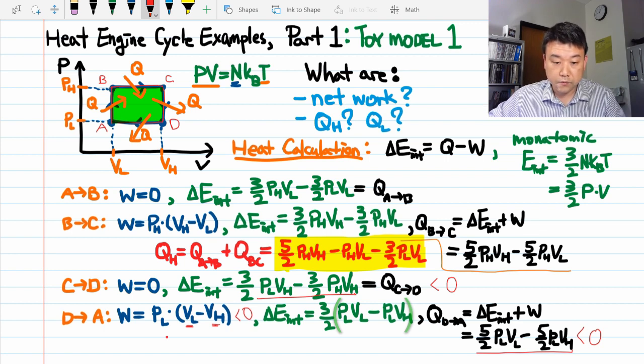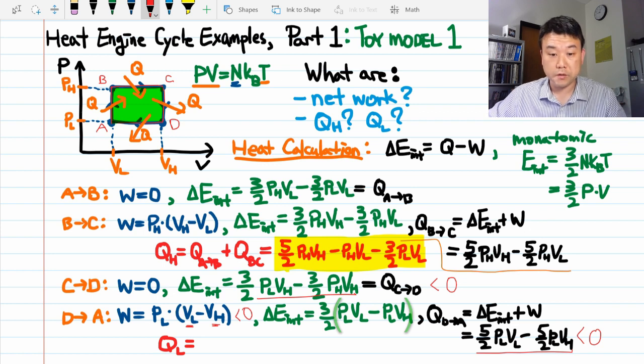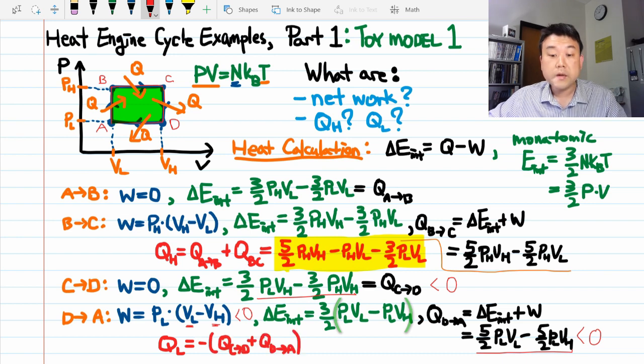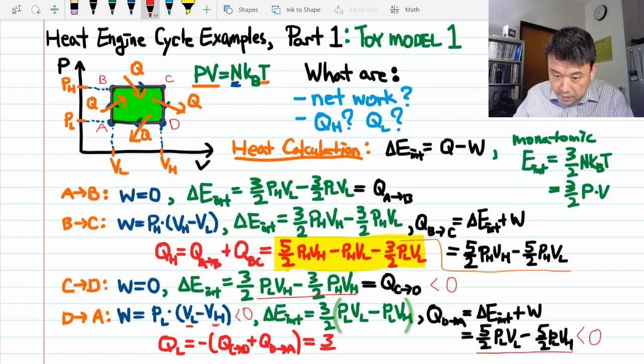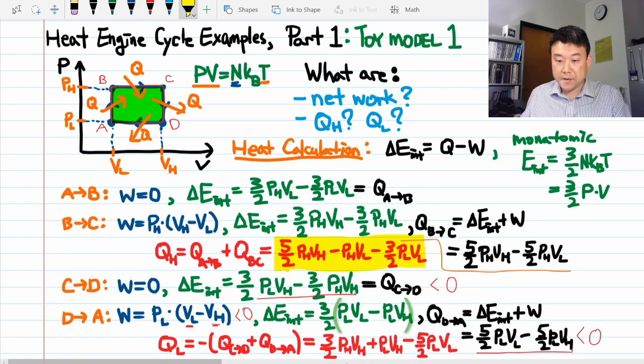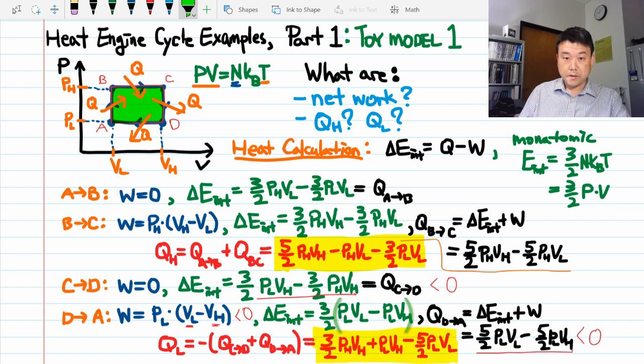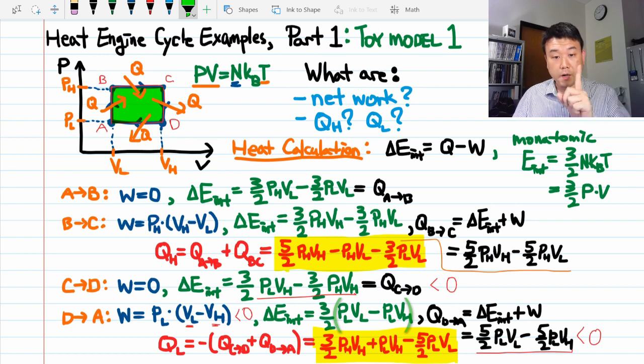That completes the cycle. And we should calculate QL, the net heat outflow from the system over a cycle. Now, by convention, both QH and QL are defined to be positive quantities. All the formulas you see in your textbook will assume that. So here, instead of adding QCD and QDA, I will calculate the minus of QCD plus QDA. This will give us the positive quantity we are looking for. This is going to take a little bit of algebra. So I'll do it on a separate piece of paper and write it down here. Writing down the positive quantities first. Let me highlight this quantity so that I can find this expression easily in a little bit when I'm looking for it.